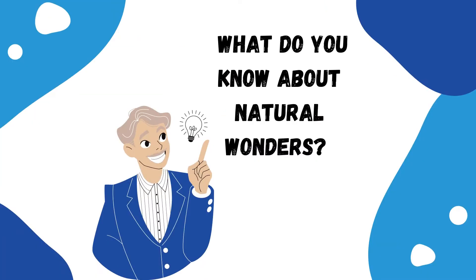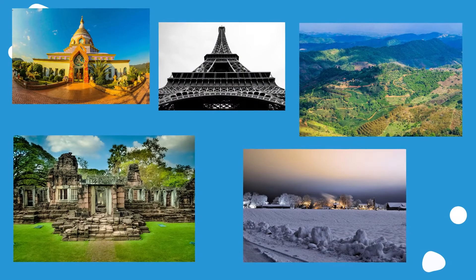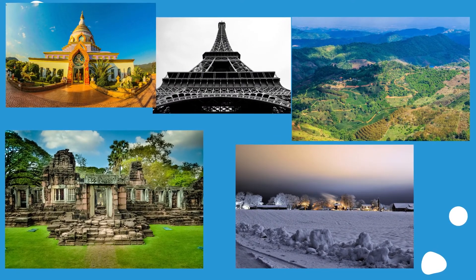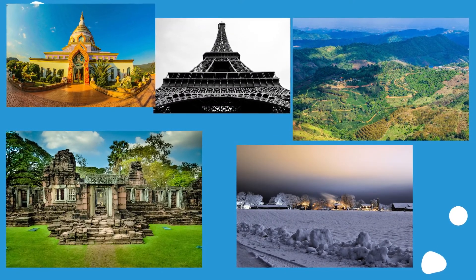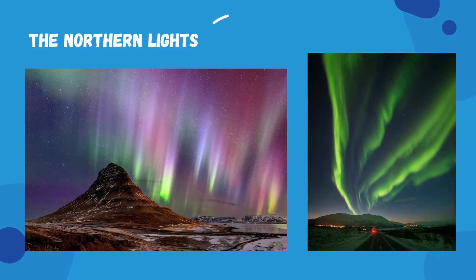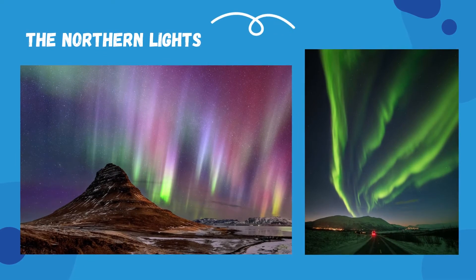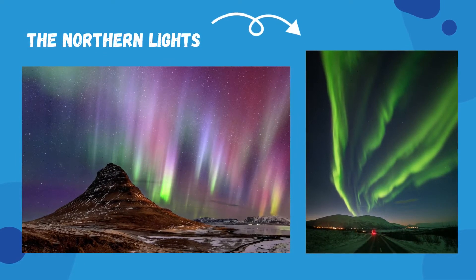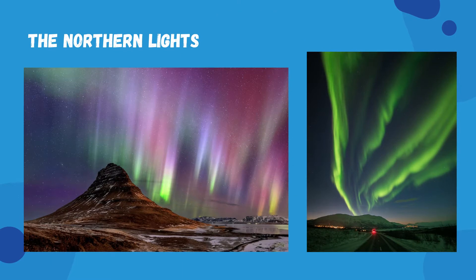What do we know about natural wonders? Earth is filled with many magnificent natural creations, among which we can mention a few examples of wonders that are around the world. Northern Lights. The Northern Lights are a natural light display in the sky. You can only see them late at night and far away from the city's light.